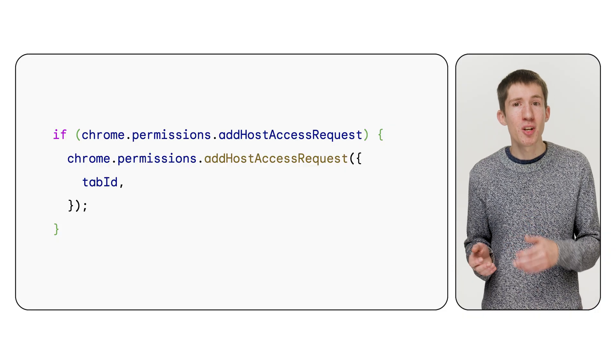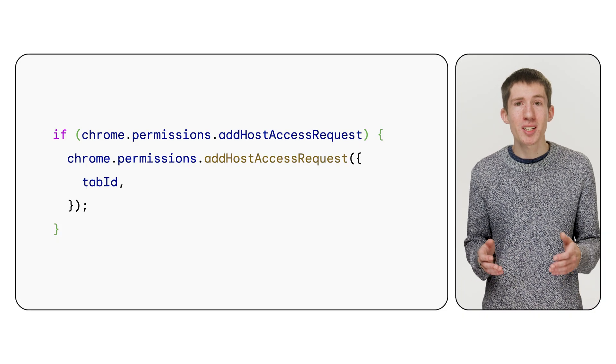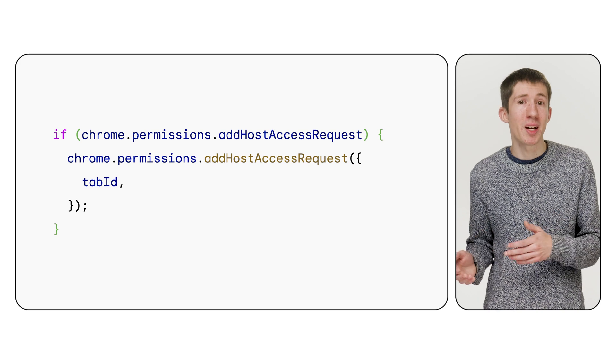These APIs are available starting in Chrome 132. It only has an effect for users with the new menu and isn't supported by other browsers just yet. But with feature detection, you can safely start using them today — just check to see if the API exists before you call it. That's the new menu and the new add host access request API that you can use to prepare your extension.